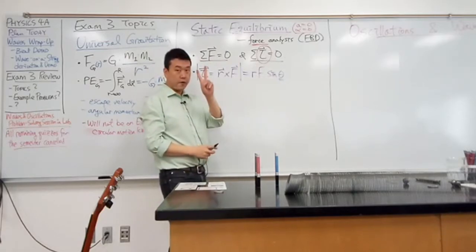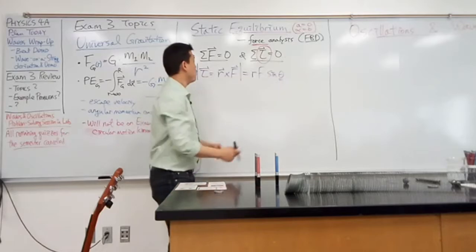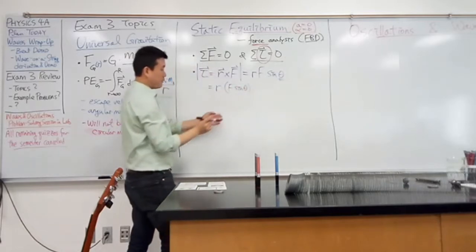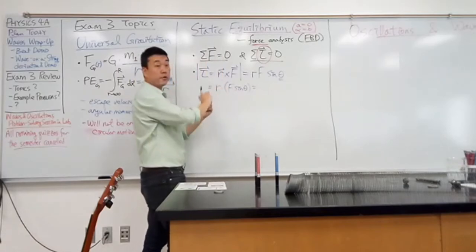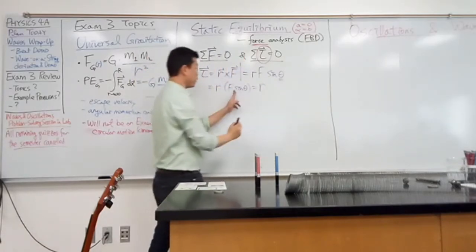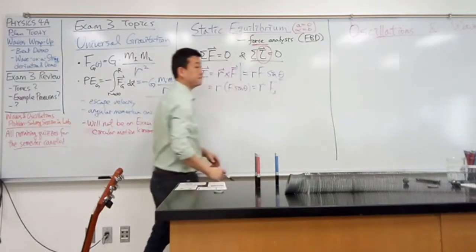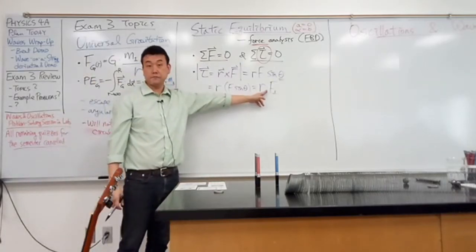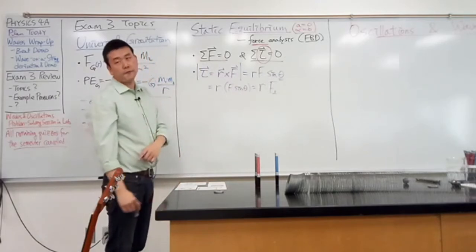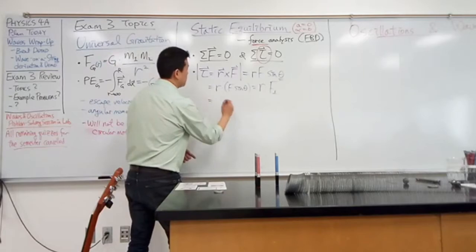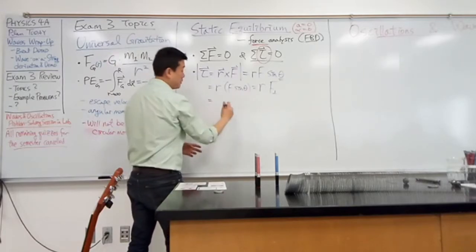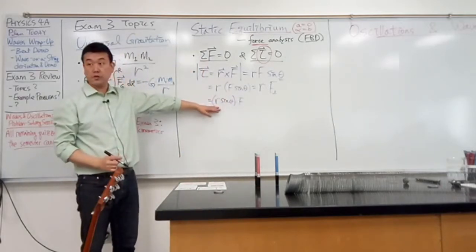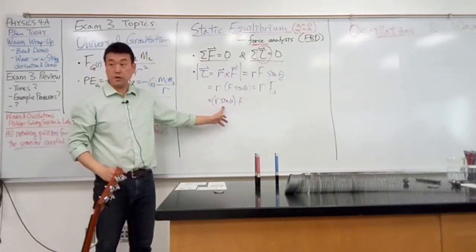We had two different ways of expressing this. One was expressing it as R times F sine theta. And really what this is is the R, the total displacement, times a component of the force that's perpendicular to the displacement. There are some geometries where this will be more helpful. But more often, you are actually more helped by this other expression, where you group sine theta with R. So it's R sine theta times F.